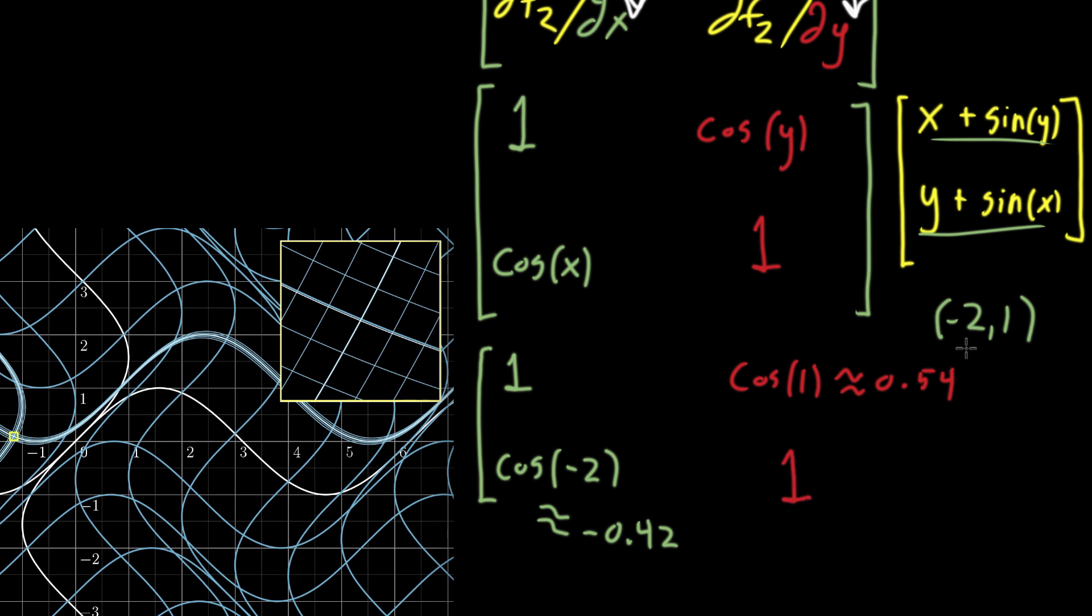So that is the matrix, just as a matrix full of numbers. And just as kind of a gut check, we can take a look at the linear transformation this was supposed to look like, and notice how the first basis vector, the thing it got turned into, which is this vector here,